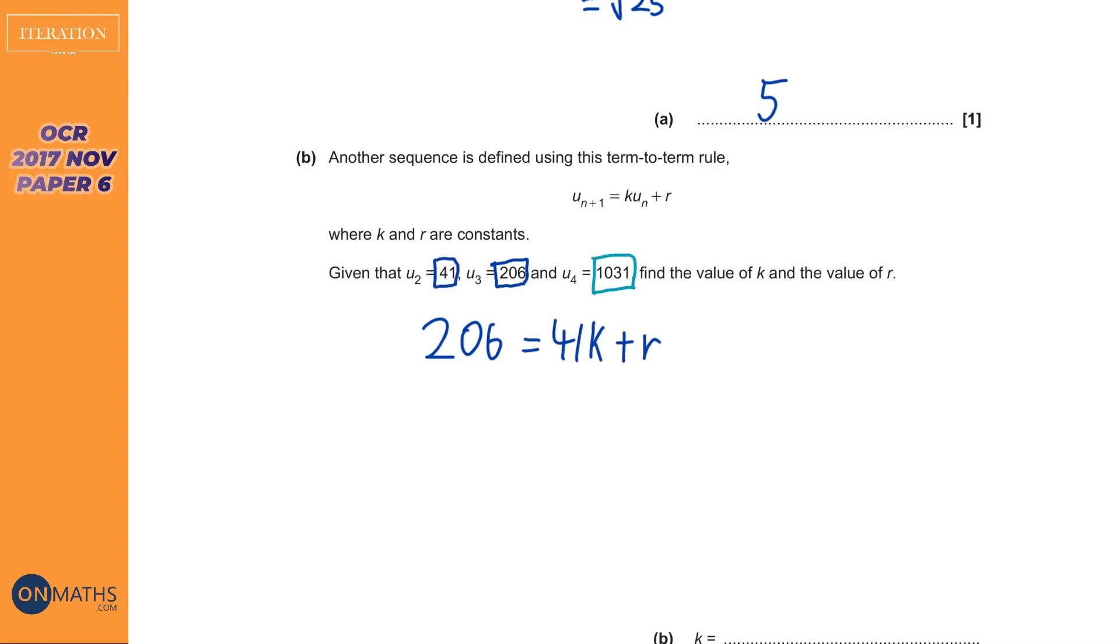Then we're going to find this one here. So 1031 is k times the previous term, this time the 206 is the previous term. So we're going to times that by k, then plus r. Now you should see here that we've got lovely simultaneous equations, but they both have the r in, so all we need to do is take away going downwards. It will be more helpful for me to do it the other way around, so I'm just going to subtract going downwards.